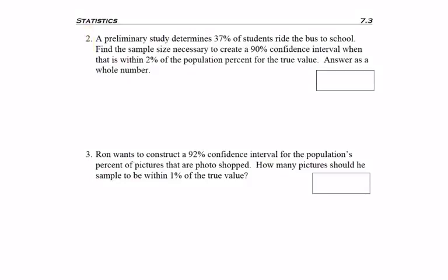Question 2. A preliminary study determines that 37% of students ride the bus to school. Find the sample size necessary to create a 90% confidence interval that is within 2% of the population percent for the true value. Answer as a whole number.